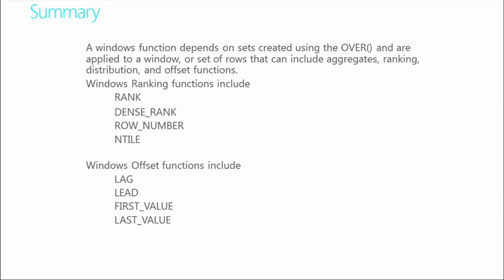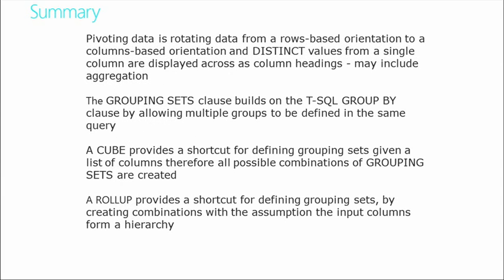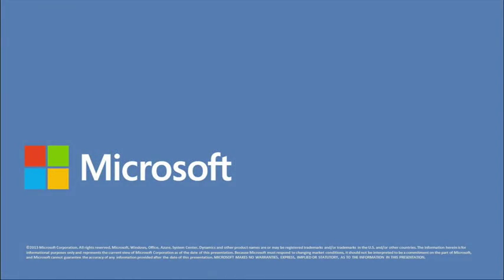We also introduced some Windows functions — the rank, the dense rank, the row number, the ntile. We also saw a cool demo on the lag, and we have some other offset functions like the first value and the last value. Pivoting is probably not something you want to lose sleep over, but unpivoting for unnormalized data would be beneficial. Grouping sets, as you saw, was really, really helpful. And then we had the cube and the roll-up that are available to us for grouping sets of content.